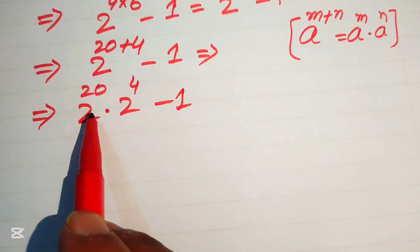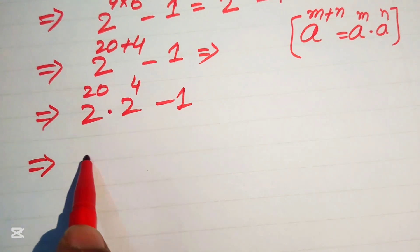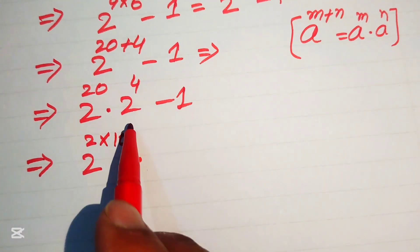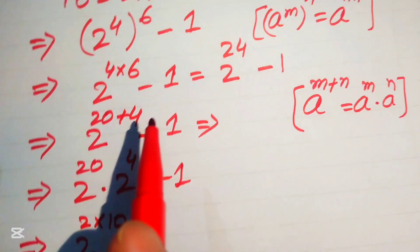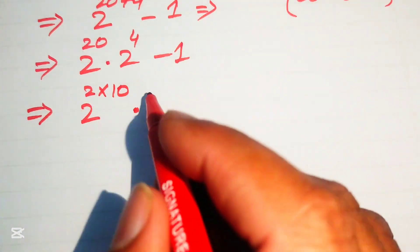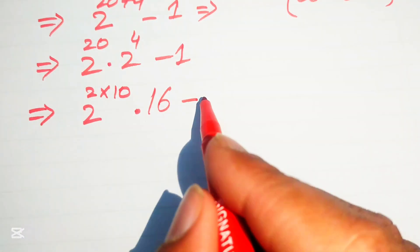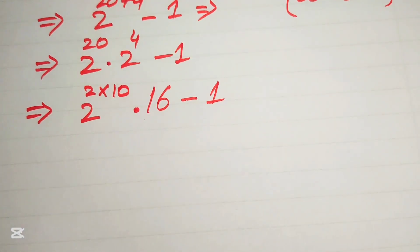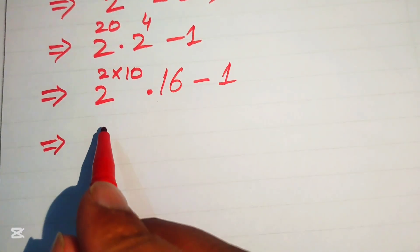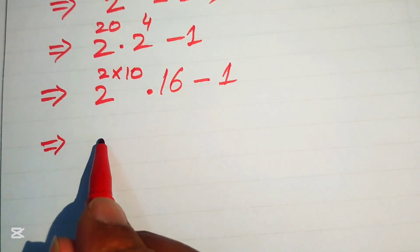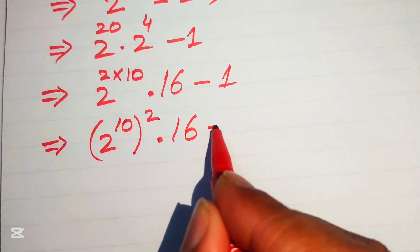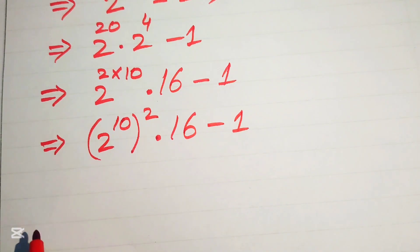We write the exponent 20 as 2 times 10, so the term becomes 2 to the power of (2 × 10). We also know that 2 to the power of 4 equals 16, so we substitute that in: this gives us 2 to the power of (2 × 10), multiplied by 16, minus 1.